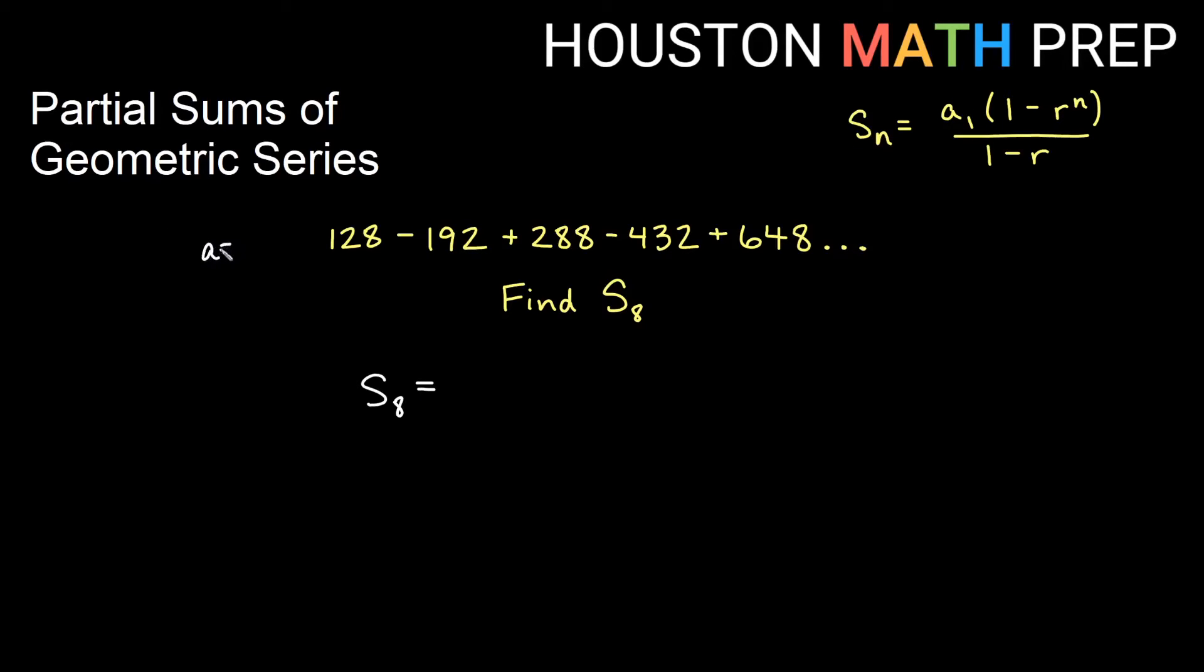a_1 is definitely 128. We can see that right there. So the question is, what am I multiplying by to get from this to this and from this to this? Remember, if it's geometric and you know for certain it's geometric, you can always take any term and divide it by the term before it and see what you get.